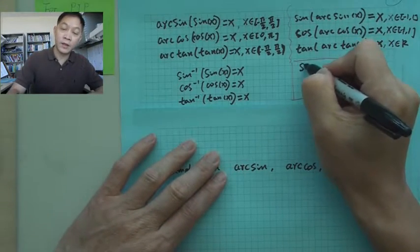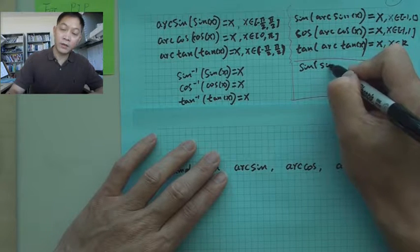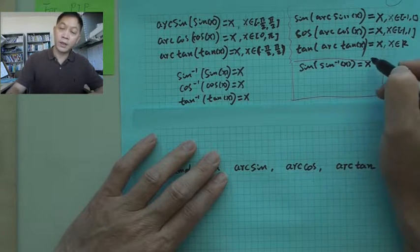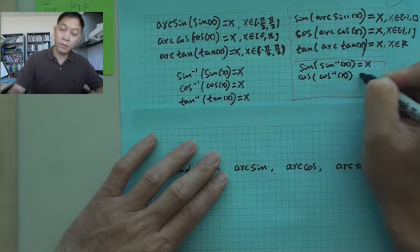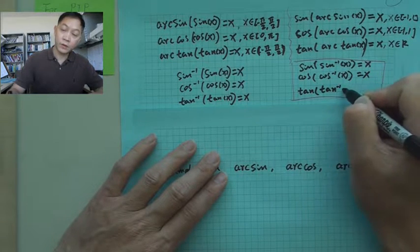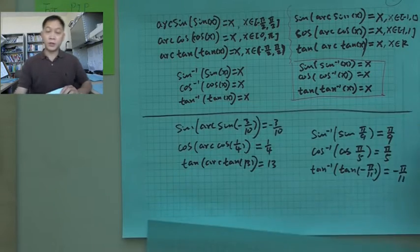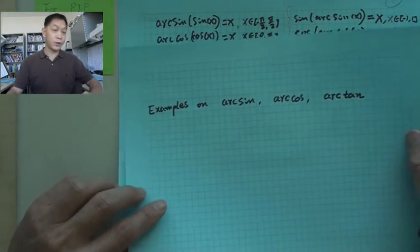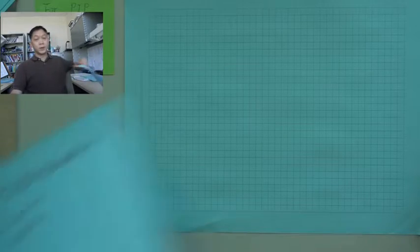You may write sine inverse x, cosine inverse x, and tangent inverse x. We did some simple examples previously. Now, let's do something more. Before we do something more, we want to review three more formulas.